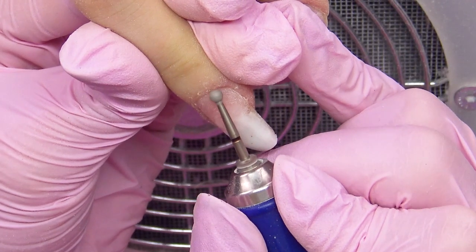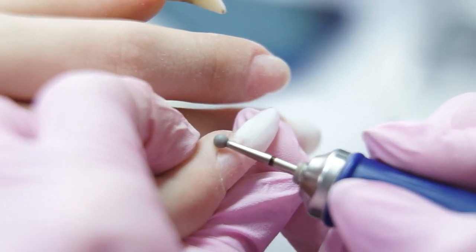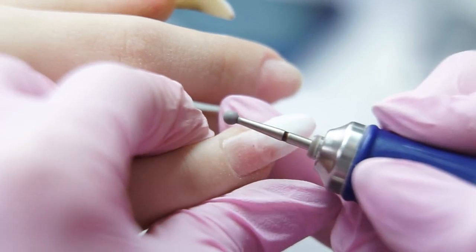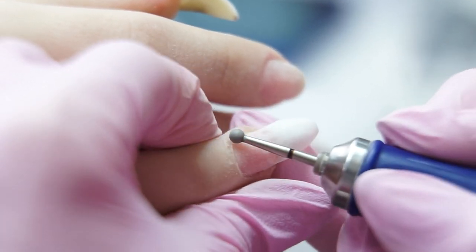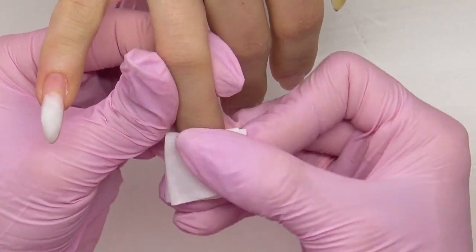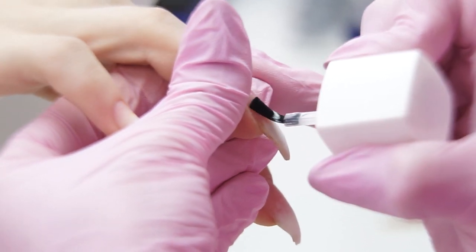If there are hangnails after the cut, then polish them with a diamond drill bit. I'm choosing a red sphere one and setting a lower speed, about 5000-7000 rpm. Dehydrating the nail plate, and applying a primer on the overgrown part of the natural nail.